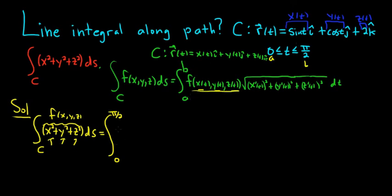So x of t is sine of t, so it'll be sine squared of t. And then y of t is cosine t, so it'll be cosine squared of t. And then z of t is 2, so it'll be 2 squared, so plus 4. This is in parentheses.